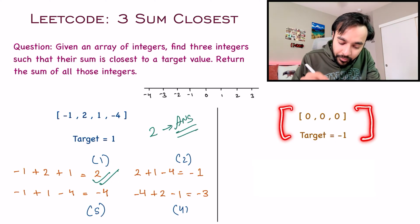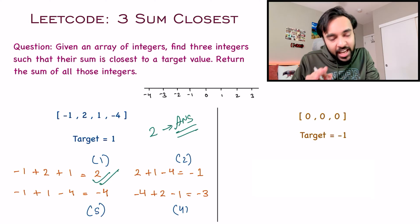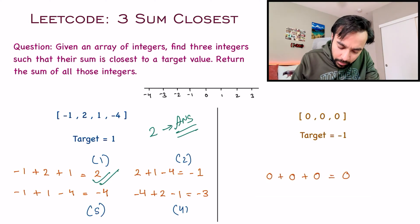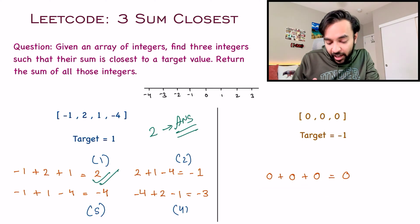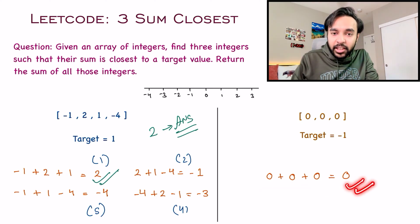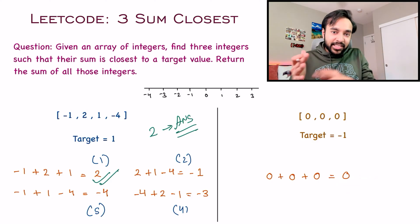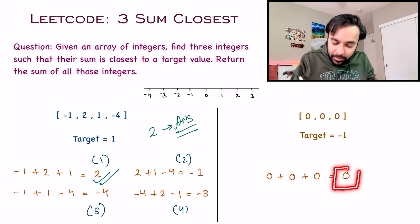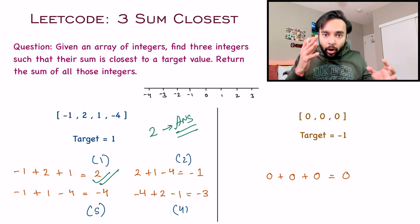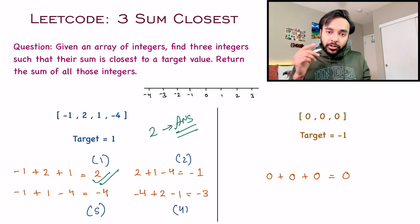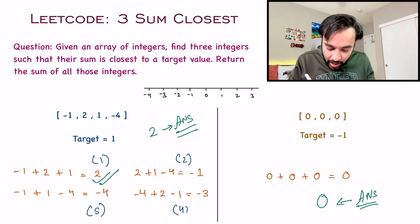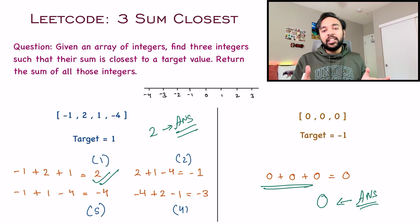Let us look at our second test case. You have an array that only has three integers and all of them are zero. So this is the only triplet you can find and their sum will be zero itself. Since there is no other combination, this will be the sum that you have to return because you do not have anything to compare it with. So for test case number two, zero will be your answer.